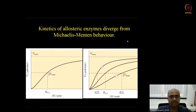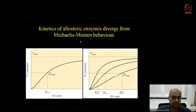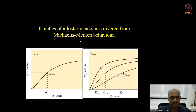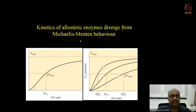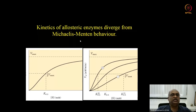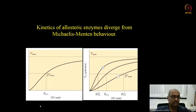Today we'll briefly look at the kinetics of allosteric enzymes and then go into other ways of enzyme regulation. Since you have a positive cooperativity situation — where binding of substrate to one subunit activates binding to the active sites of other subunits — the initial substrate binding leads to a significant increase in the rate of reaction.